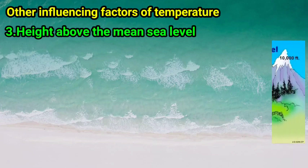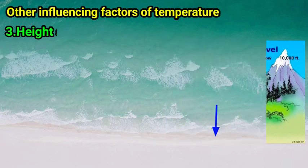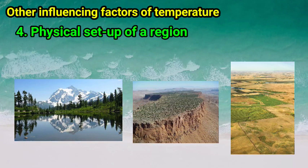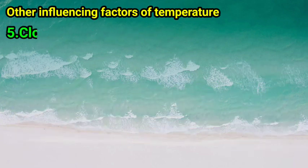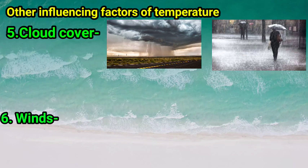Number three: height above sea level. As we move upward from sea level, the temperature of air decreases, and this is how height above sea level affects the temperature of a region. Number four: physical setup of a region — for example, mountain, plateau, or plain — also causes temperature to change. Number five: cloud cover and rain also affect the temperature of a region. Number six: winds — local winds of a region also affect temperature.